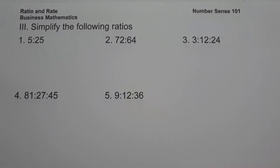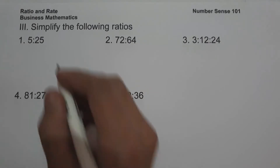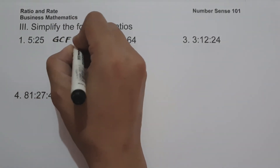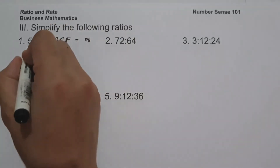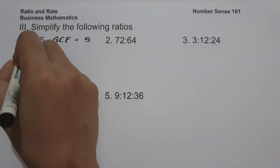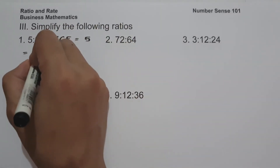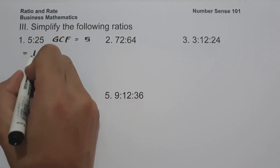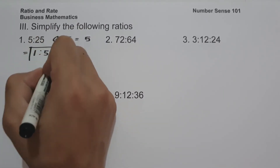On the third set of examples, we are going to simplify the following ratios. On number 1, we have 5 is to 25. The GCF of 5 and 25 is 5. 5 divided by 5 is 1, and 25 divided by 5 is 5. Therefore 5 is to 25 is equal to 1 is to 5, and this will be our answer.